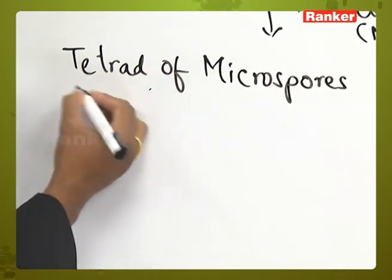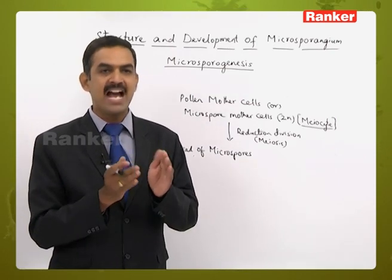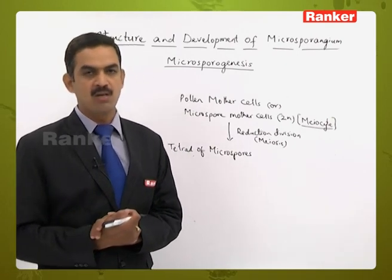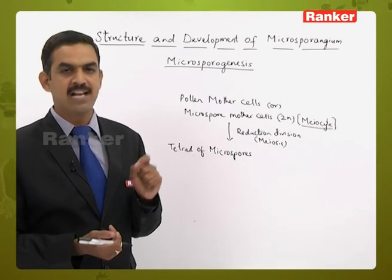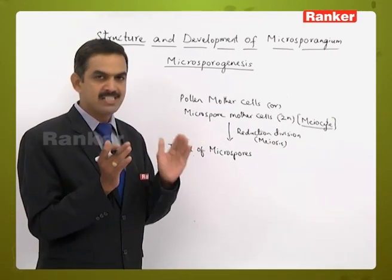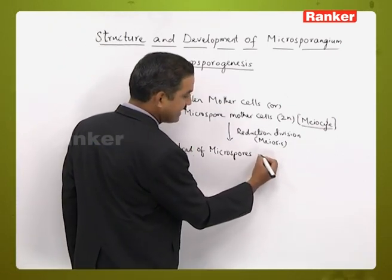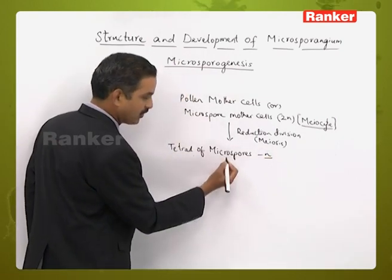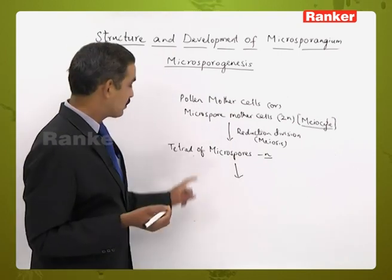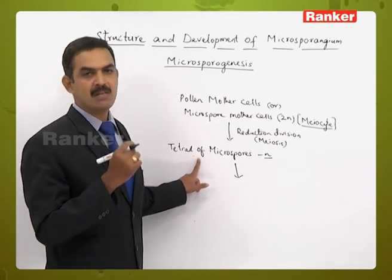The term 'tetrad' refers to the four microspores that are not immediately separated after division. They are bound together by a specialized complex organic material called callose. The callose structure helps in the attachment of the four microspores, keeping them as one unit. Each cell in the tetrad is haploid.